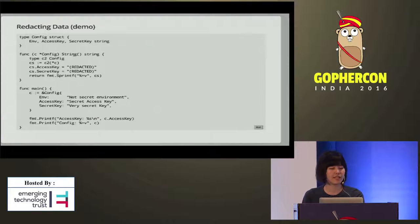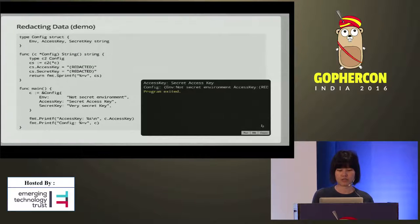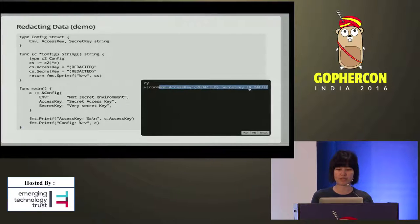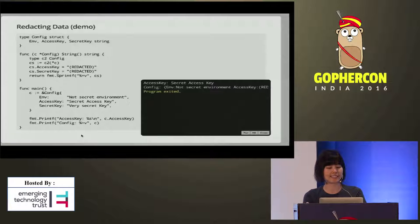For more information, see the node in the fmt package. Looking at this in action: you have the config struct, and then you declare a String() method. When you actually print the code, you can see that the access key is redacted automatically. But if you want to access the access key, you can still do it by calling the access key field of the config struct directly.